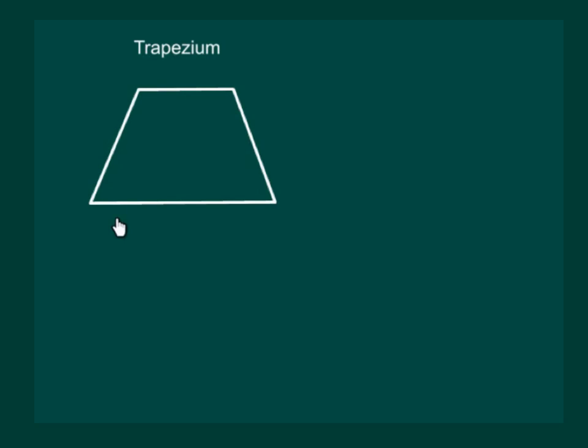Consider this figure of a trapezium. We know that in a trapezium only one pair of opposite sides are parallel. Let us see how we will find the area of this trapezium. Let us suppose that the length of its base is a and its height is h.